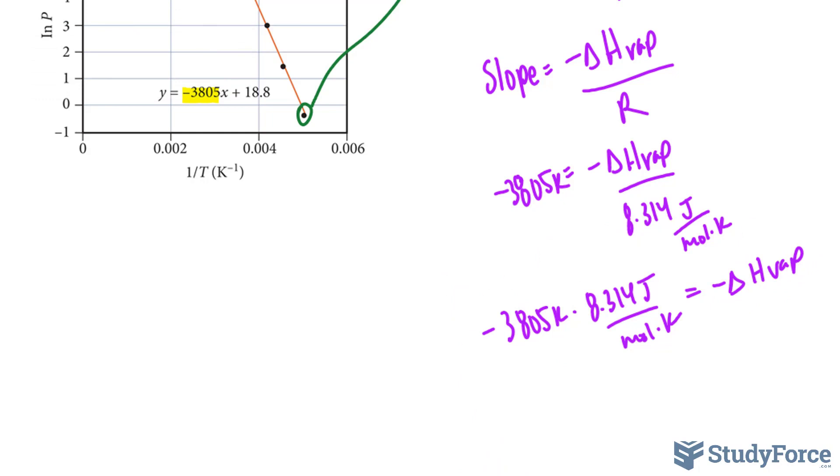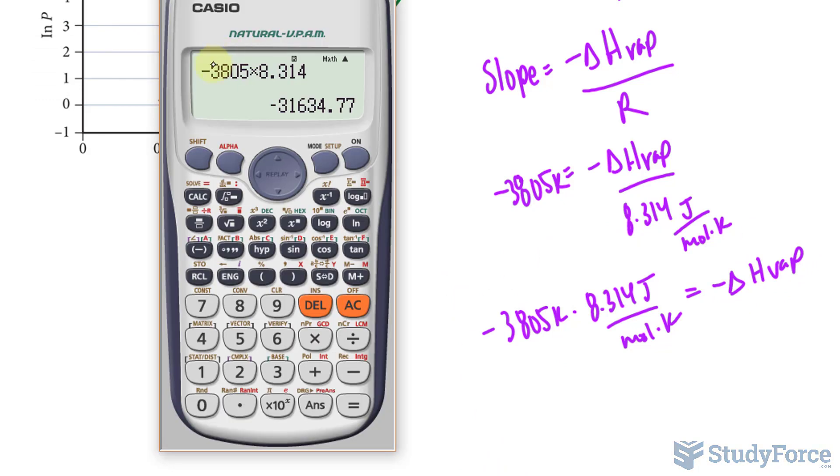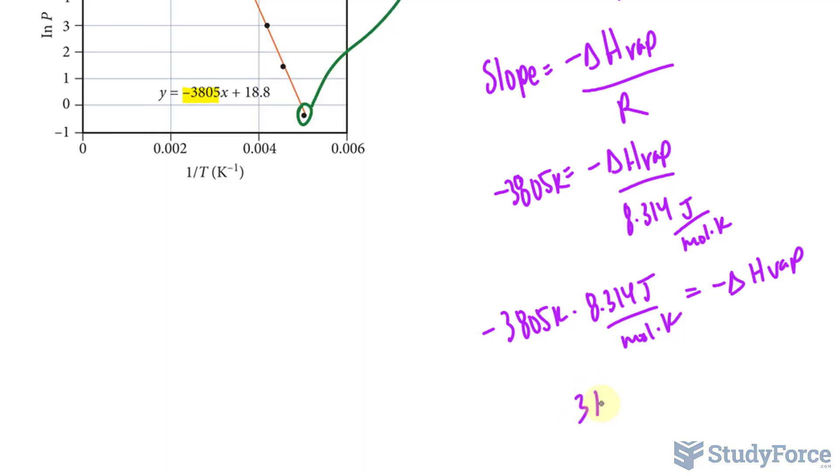So let's use our calculator to plug that in. If you do, you should end up with negative 31634. And since this is negative, you divide both sides by negative 1 or multiply both sides by negative 1. And you should end up with 31634 joules per mole.